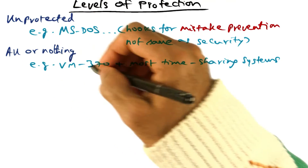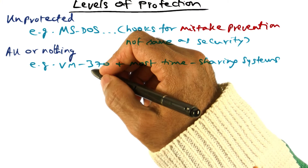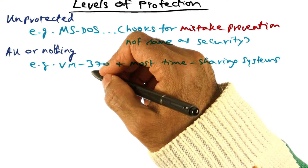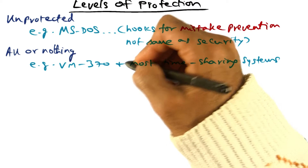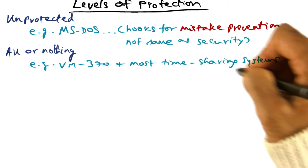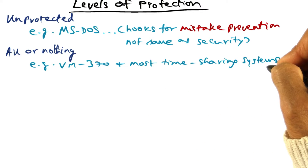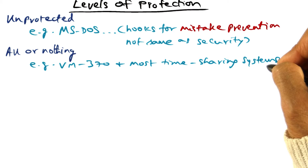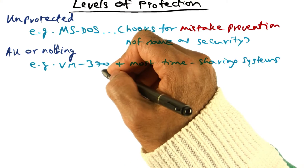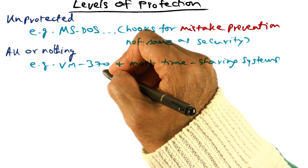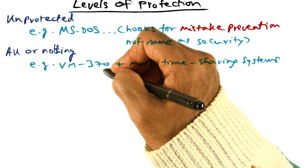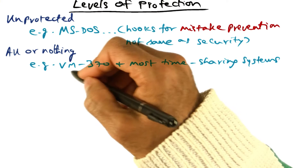The first level is what he calls all-or-nothing. An example of a system that implemented that would be IBM's VM 370 and most of the time-sharing systems of the 1960s and 70s. They had this all-or-nothing property. In the VM 370, each user was given the illusion as though they have their own personal system.